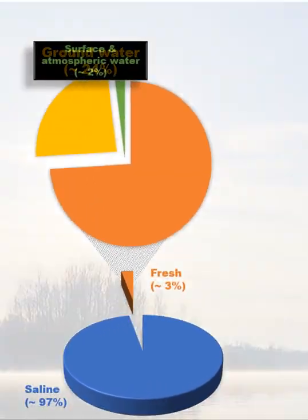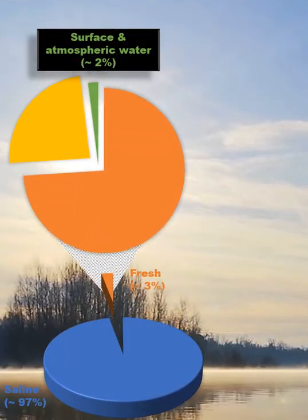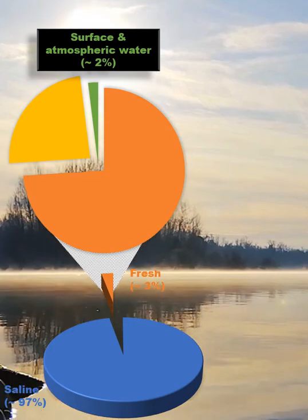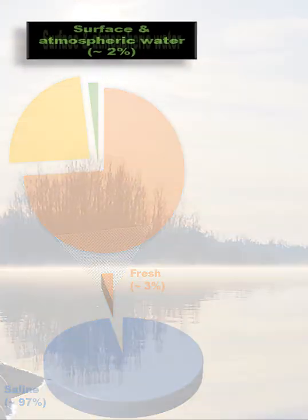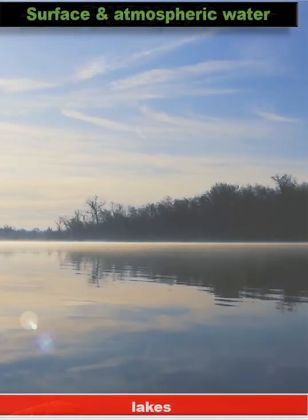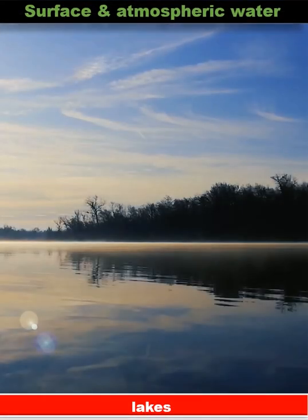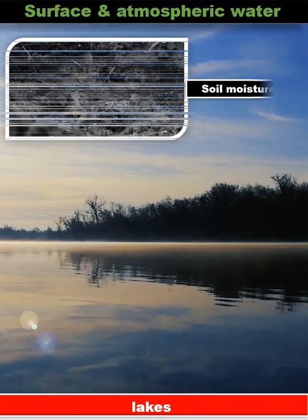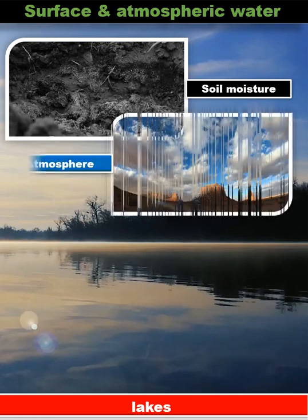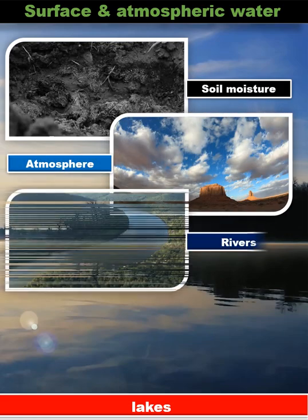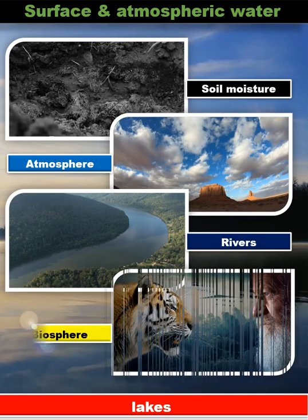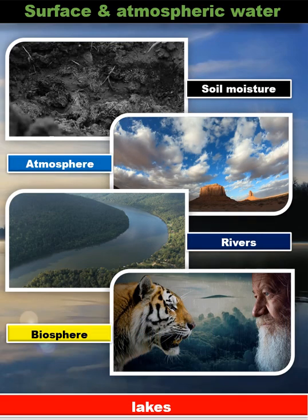The remaining 2% of the freshwater is the surface and atmospheric water present as lakes, soil moisture, atmosphere, rivers, and the biosphere.